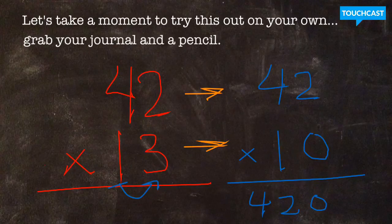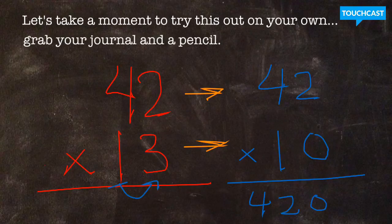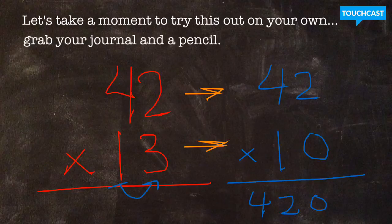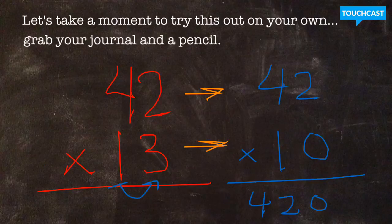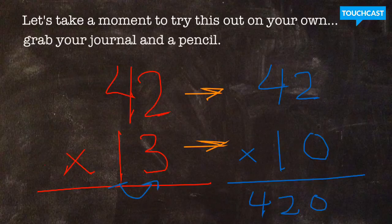Hopefully you took a second to work this out in your journal. You should have an answer that looks similar to the one written in blue. I decided, after kind of checking out my two factors for just a minute, that if I rounded 13, it would round down to 10, and then I would be left with the multiplication equation 42 times 10, which, based on the zero trick, I should be able to do pretty easily in my head. 42 times 10 equals 420.